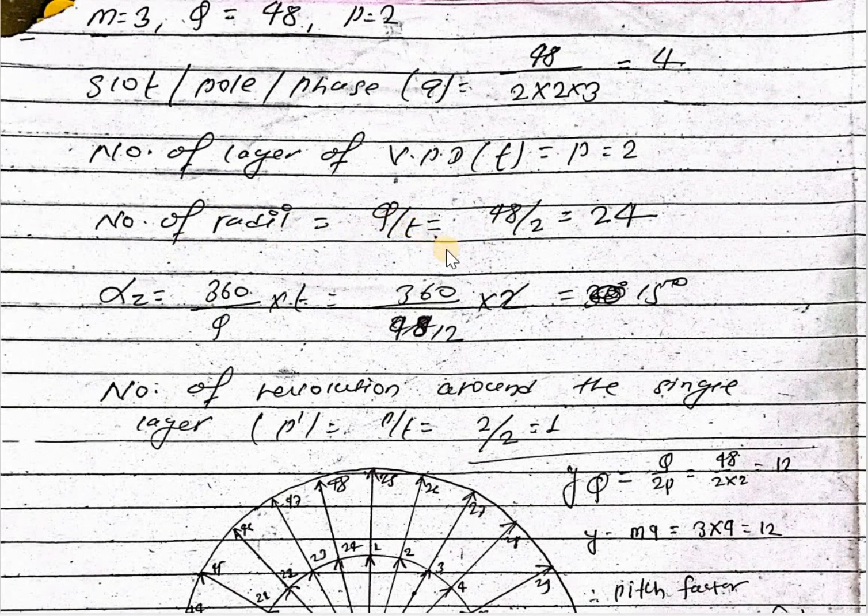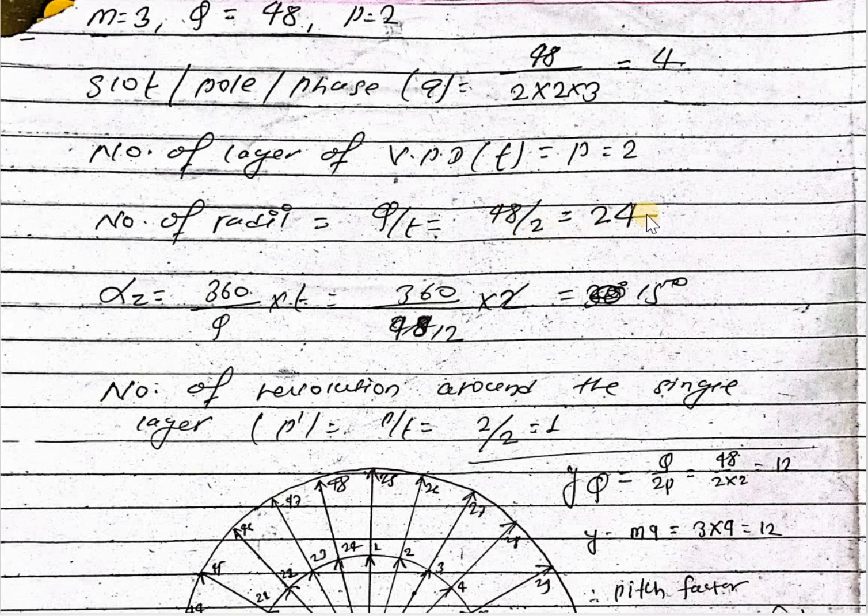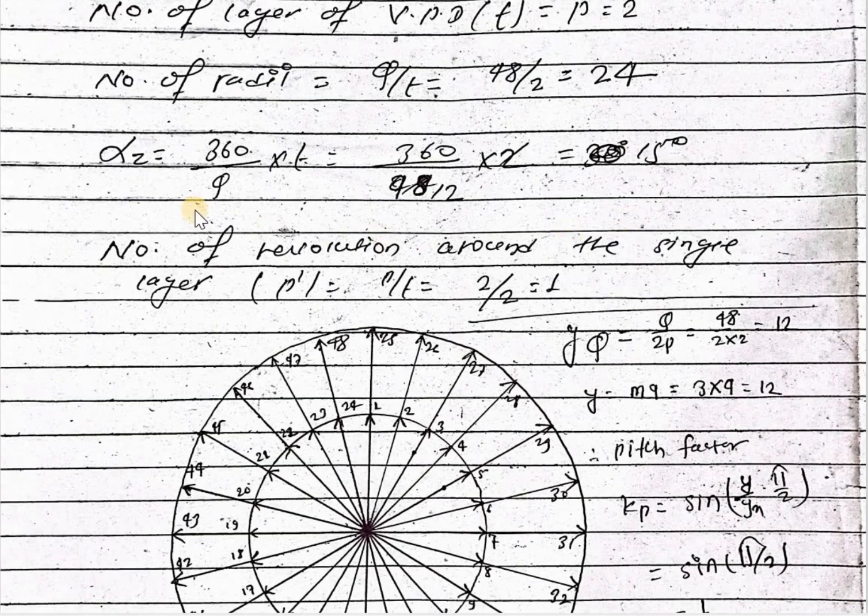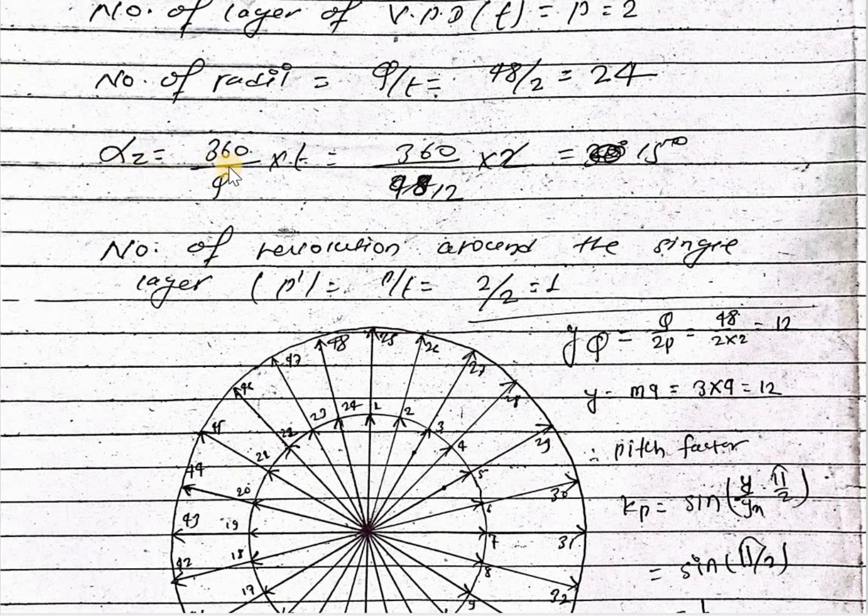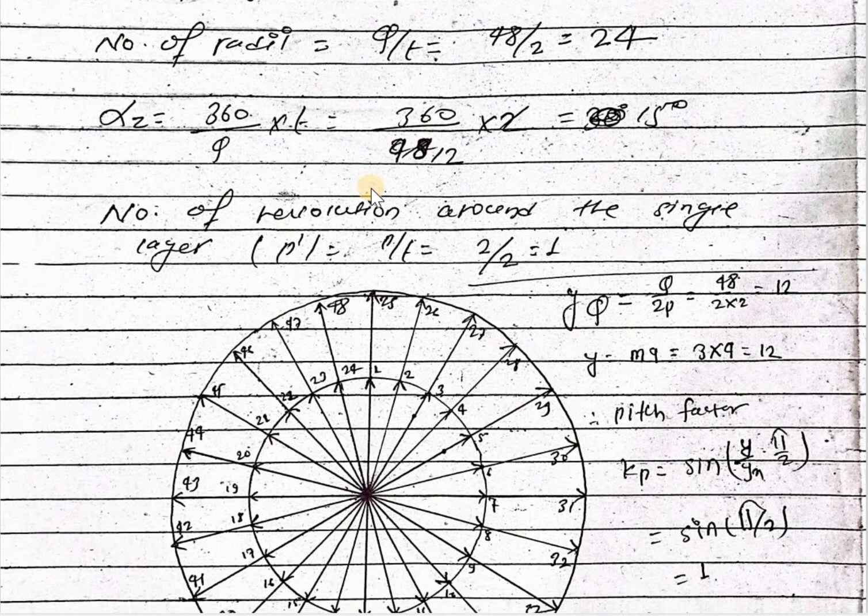And number of radii q upon t, that is 48 upon 2 is 24. And alpha z equal to 360 into q into t. Put the value of q and t, we can get alpha z equal to 15 degree.